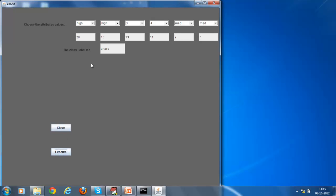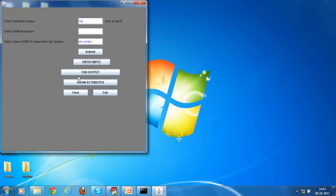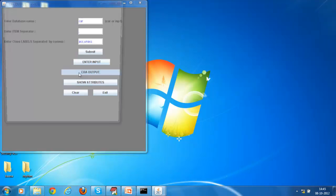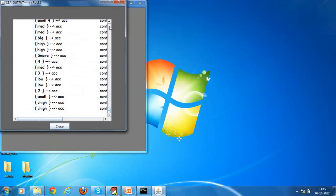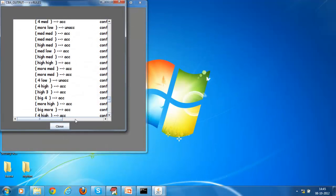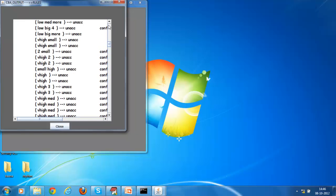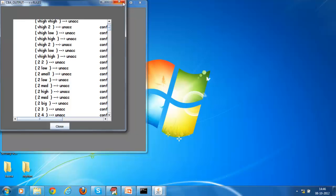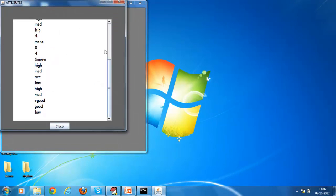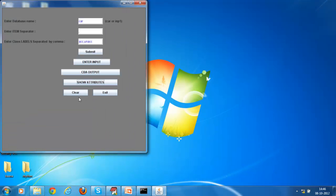Now we have to enter the classification inputs and get the classified output. The output will be generated based on the data set. As seen the output is unaccepted for the given part data set. And the next we get the final CBA output. The conference level and the attributes in the data sets can be seen. This is the end of the CBA. Thank you.